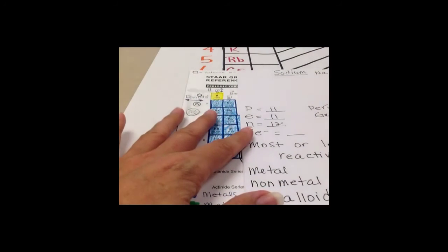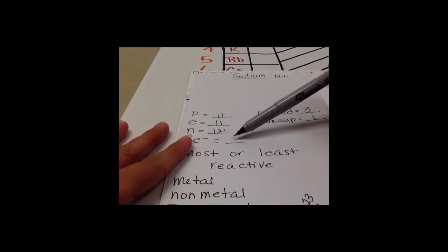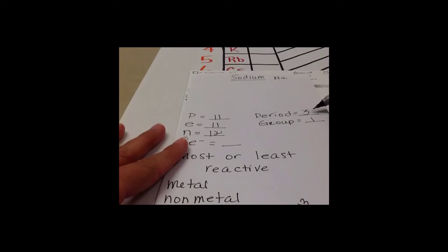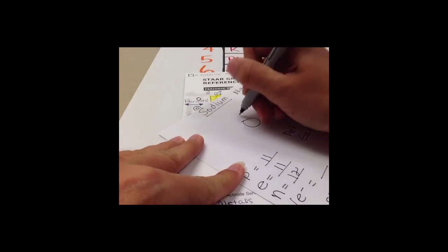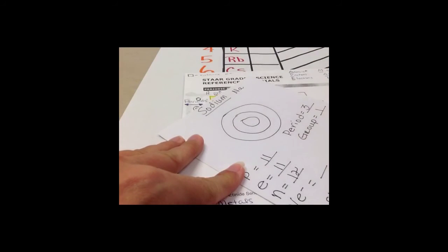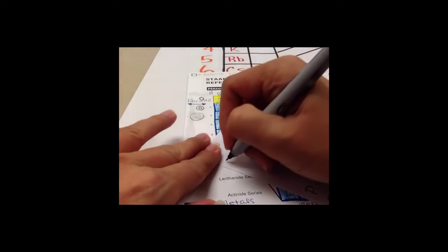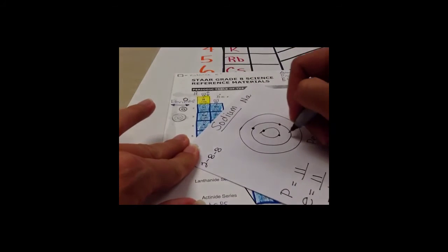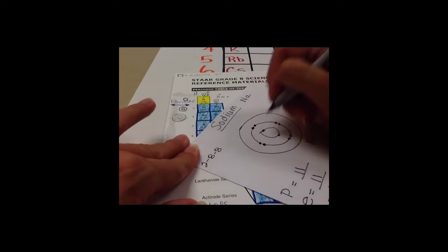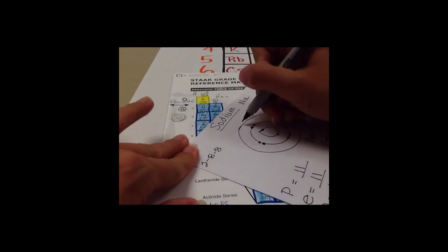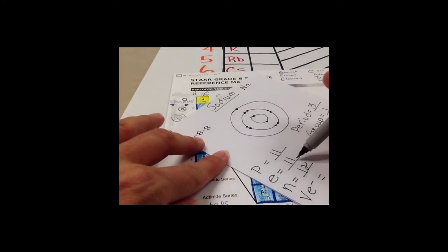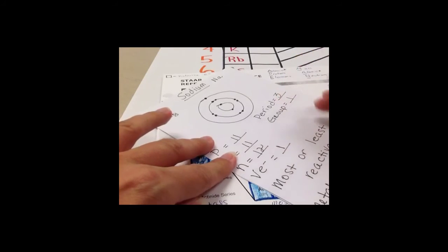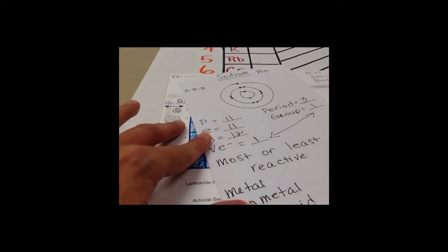I know that my group number equals my valence electrons, but let's verify. My period number tells me there are three shells, so I'll draw them: one, two, three. I know there are 11 electrons and I have to remember my 2-8-8 rule. The first shell holds two, the second shell holds eight — that puts me at 10 electrons — so the remaining one electron goes to the third shell. So I have one valence electron on the outer shell, and the group number equals valence electrons.